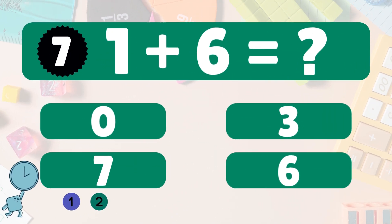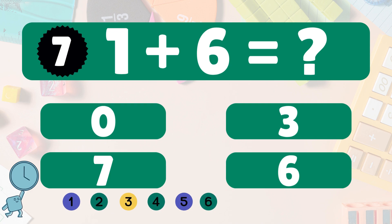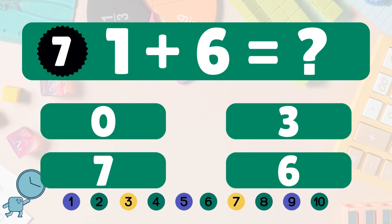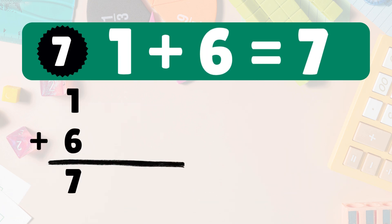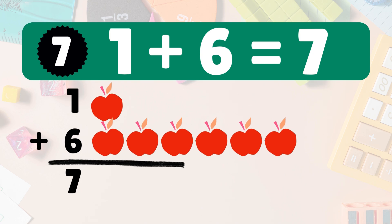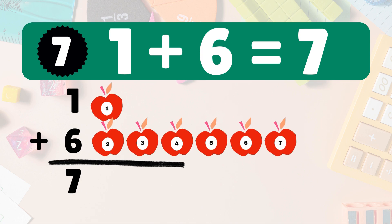1 plus 6 equals what? 1 plus 6 is 7. Here's 1 apple. Add 6 more. Count with me. 1, 2, 3, 4, 5, 6, 7. So 1 plus 6 is 7. Awesome. Next.